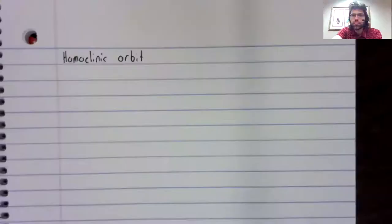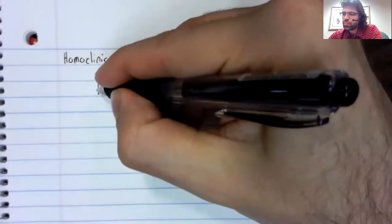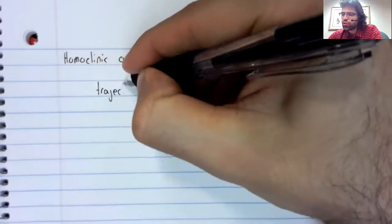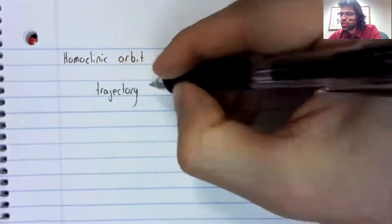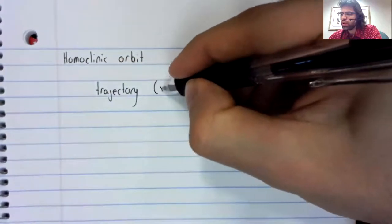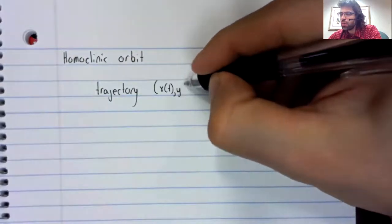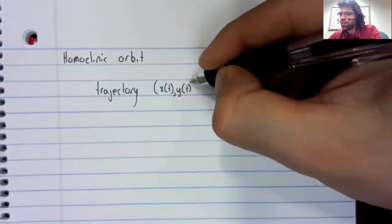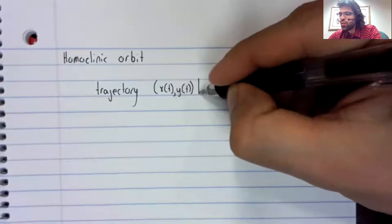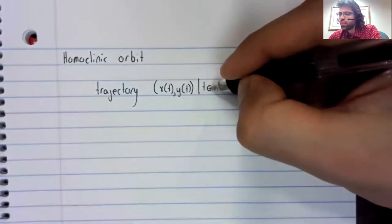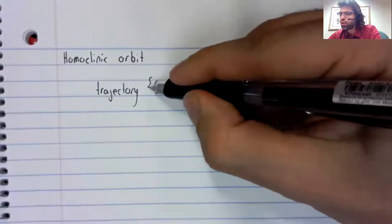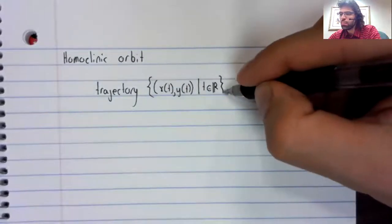We will now define a homoclinic orbit. A homoclinic orbit is a trajectory, that is, its points x of t, y of t, where t runs over the real numbers.